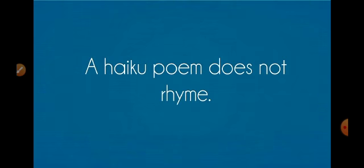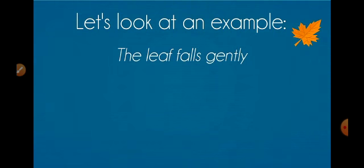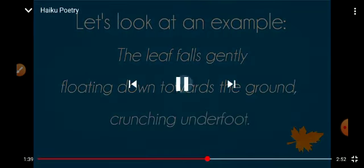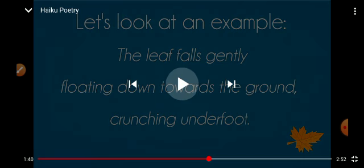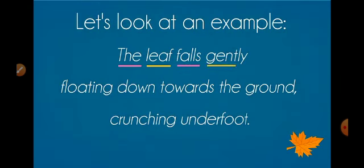A Haiku poem does not rhyme. It does not have a rhyming scheme. Let's look at an example: The leaf falls gently, floating down towards the ground, crunching underfoot. I repeat: The leaf falls gently, floating down towards the ground, crunching underfoot. So it's not rhyming in any way, but we have the syllable count here. Look here properly and see: The leaf falls gently—that means five.